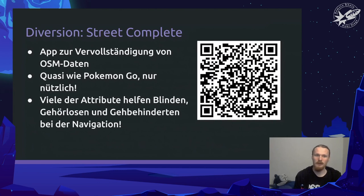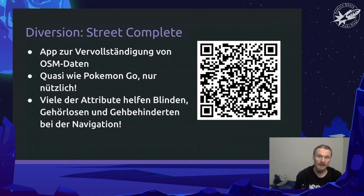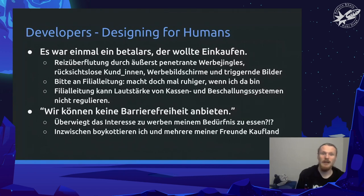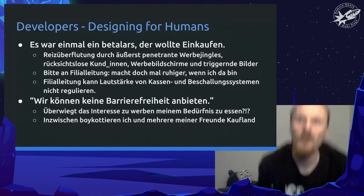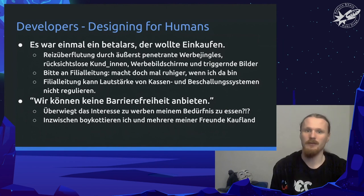StreetComplete is a great app with which you can help add to OpenStreetMap data. It's basically Pokémon Go, but useful. You walk around the world and add data to streets that are not tagged sufficiently. You can add a lot more information that can be very useful for blind people, people with hearing impairments, and such. That is also one example of things that developers can do to provide more accessibility.